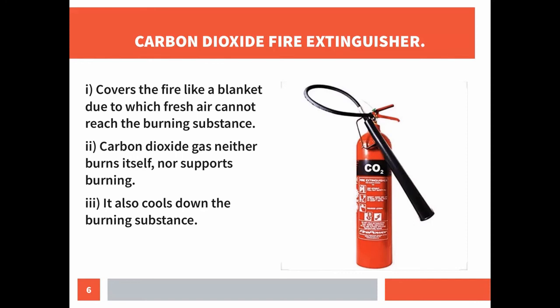Carbon dioxide does not harm electrical equipment. Fires caused by inflammable materials like oil or petrol are also extinguished using carbon dioxide fire extinguishers. Carbon dioxide used for extinguishing fire can be stored as a liquid at high pressure in cylinders. When released, carbon dioxide expands enormously in volume and cools down. It not only forms a blanket around the burning substance but also lowers the ignition temperature and stops the supply of oxygen, removing two key criteria for combustion.